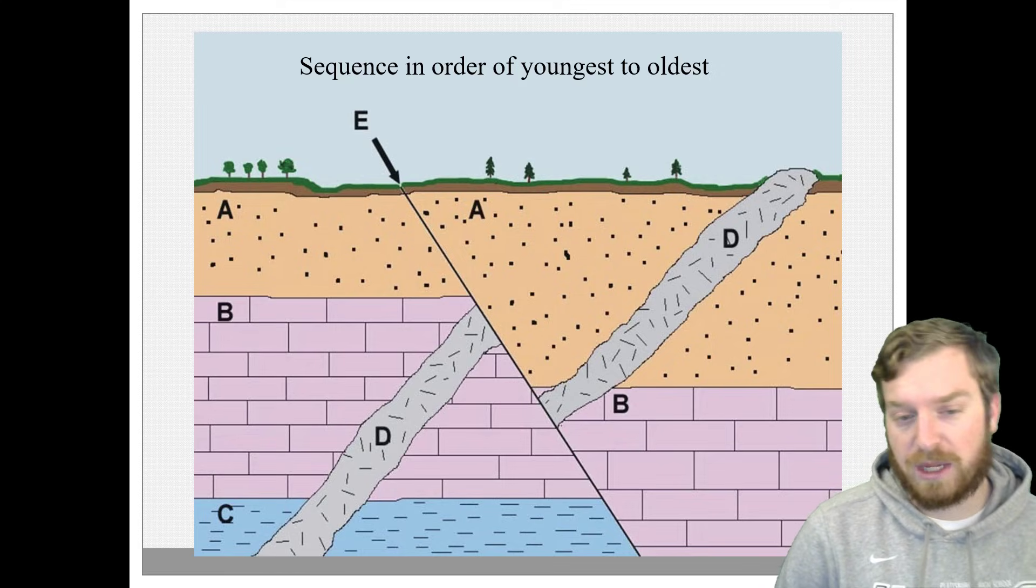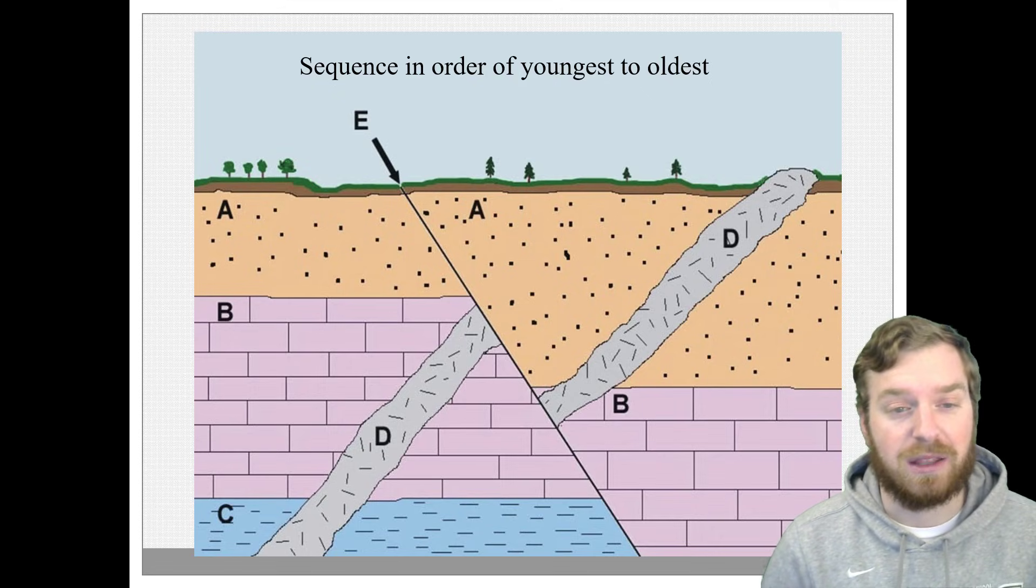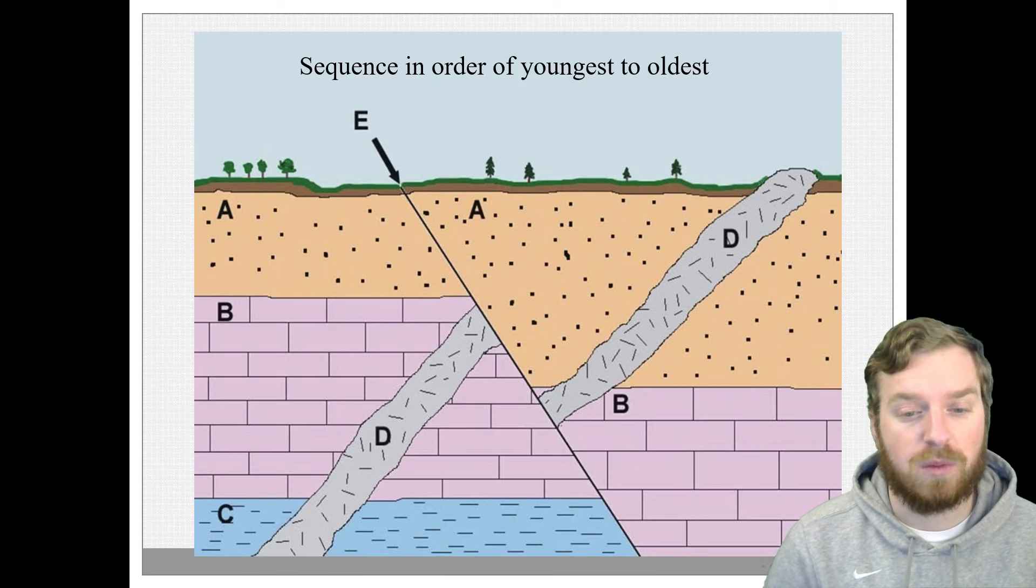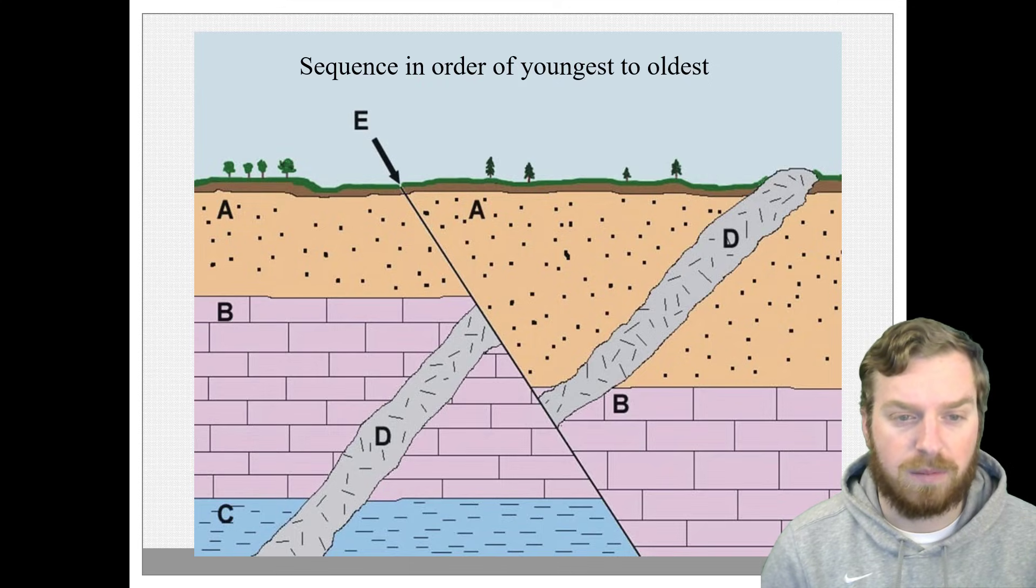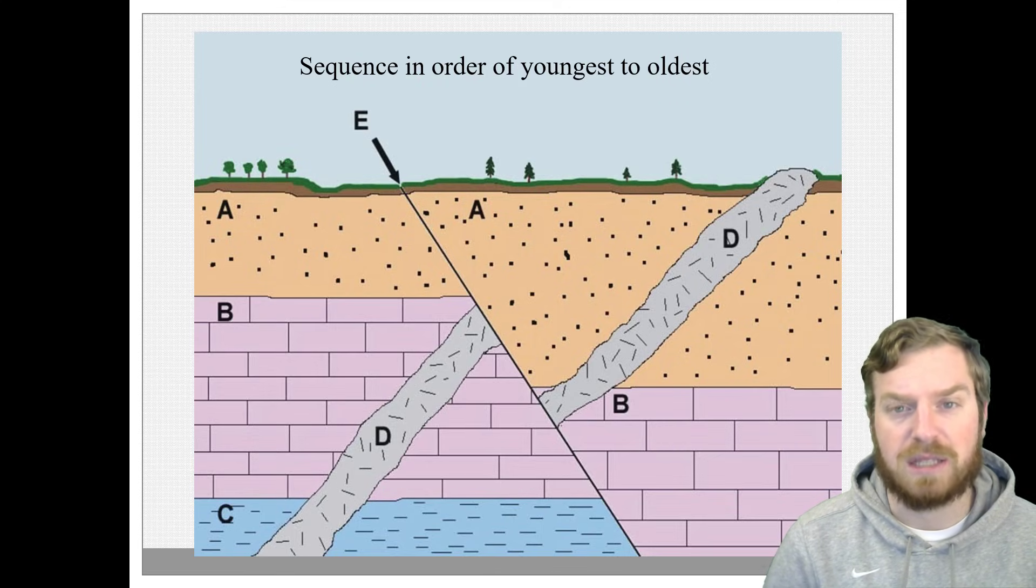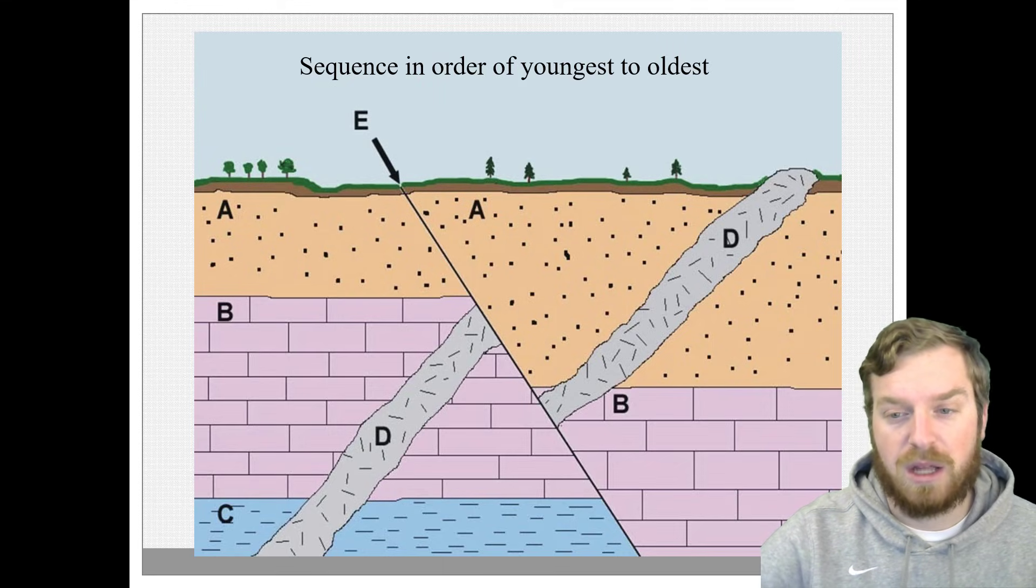So we have some rock layers, we have a fault line, we have an igneous intrusion that's letter D on the little cross section here, and we want to figure out what happened first and what is the youngest, what is the oldest. So you might have some ideas of what came first already. We're going to come back to this image in a second. I'm going to first talk about how we can sequence things and the basic rules to it, and then we're going to come back to this actual picture and we're going to do it together.